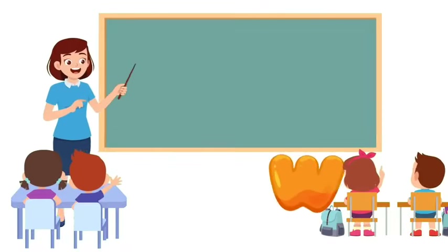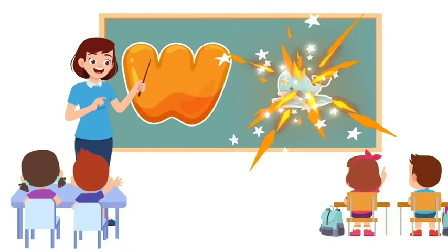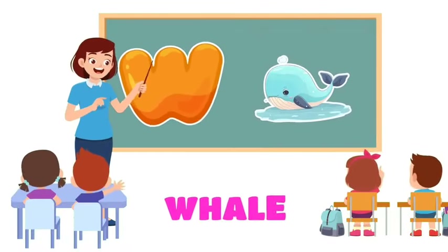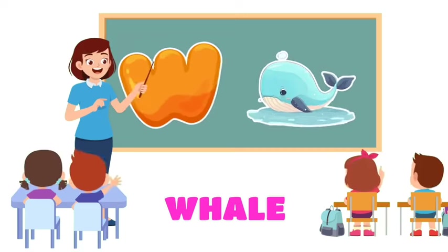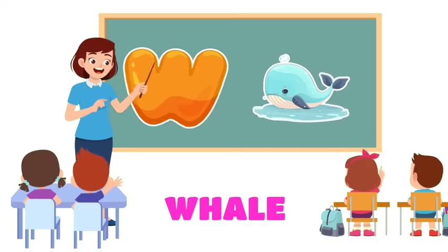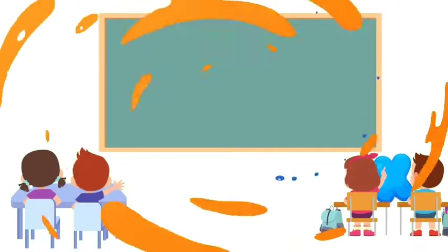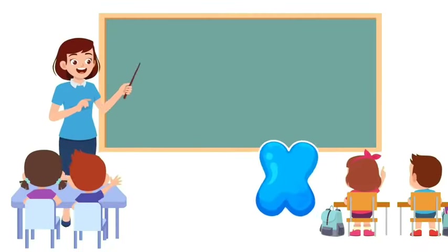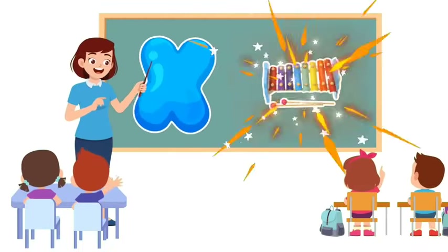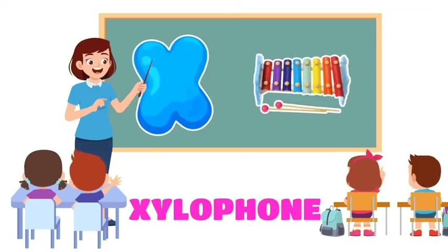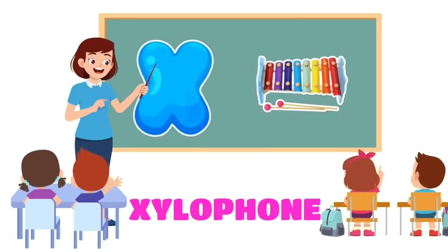W is for Whale. W, w, whale. W, w, whale. W, whale. X is for Xylophone. Z, z, xylophone. Z, z, xylophone. X, xylophone.